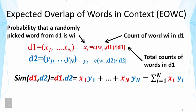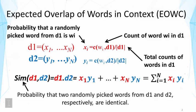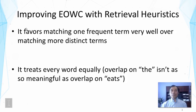In this method, we represent each context by a word vector that represents the probability of a word in the context. And we measure the similarity by using the dot product, which can be interpreted as the probability that two randomly picked words from the two contexts are identical. We also discussed the two problems of this method.